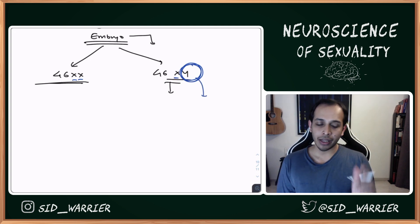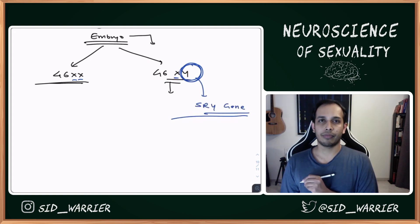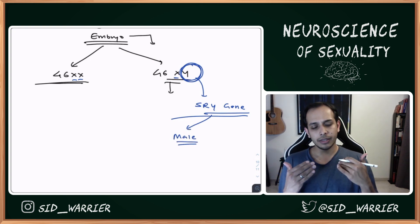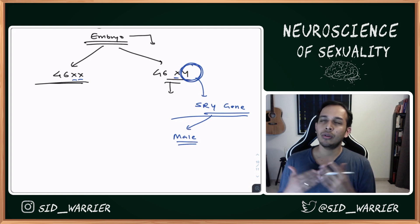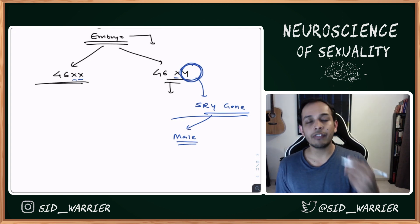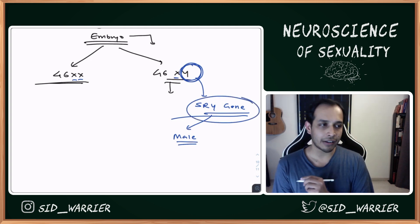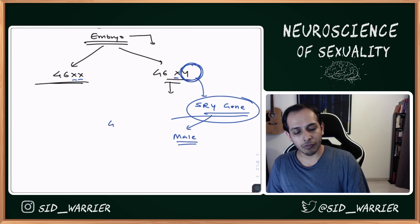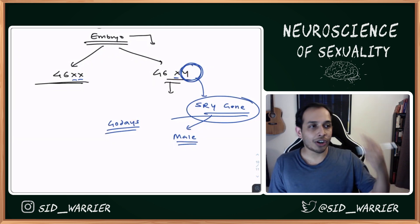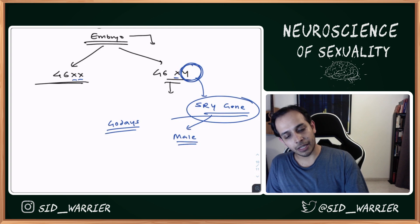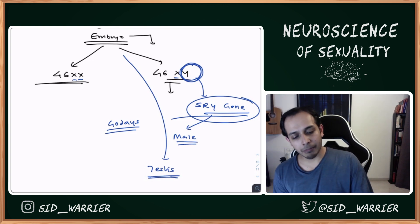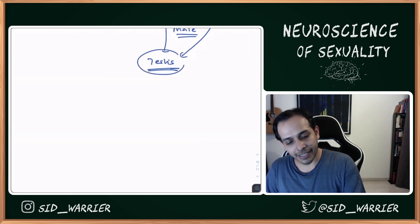The Y chromosome has something called the SRY gene, and the SRY gene is what leads to male sex. There are many genes — around 30 to 40 genes — that come together to create male sex, but the SRY gene was one of the first identified and one of the most important. Around 40 days after conception, the embryo will develop the first signs of testes, and this happens because of the SRY gene.